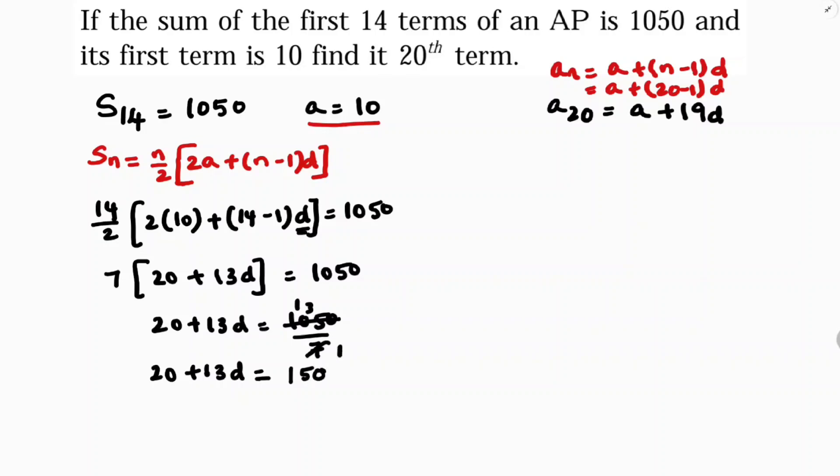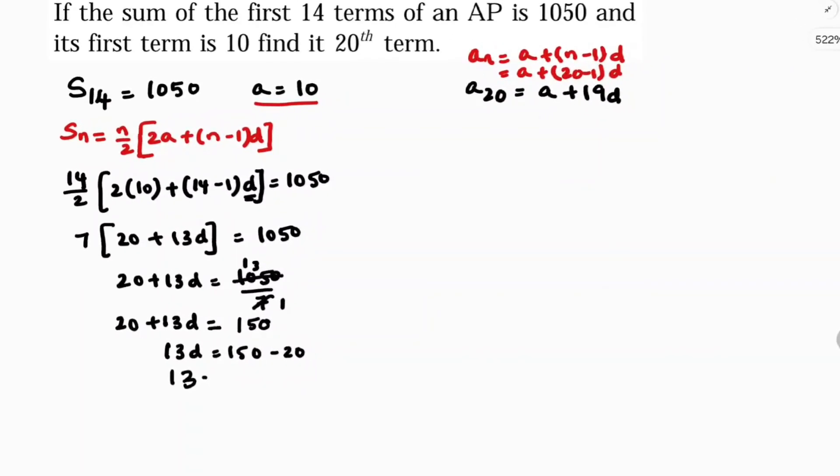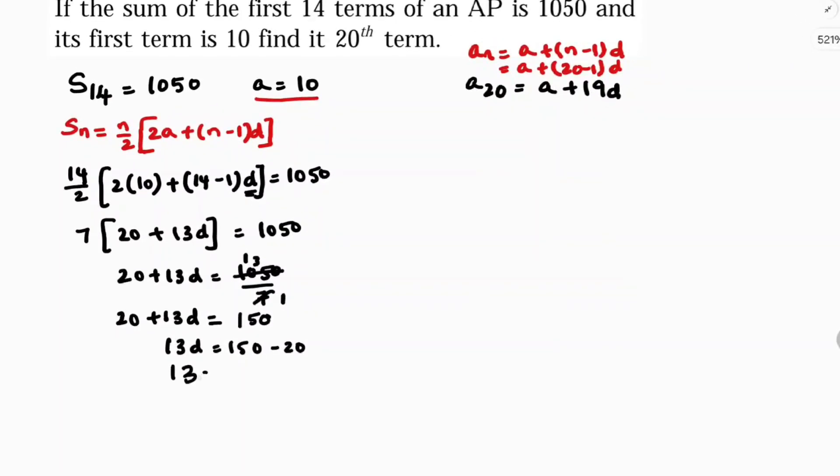So 150, so 13D, here 13D equals 150 minus 20, 13D equals 130.